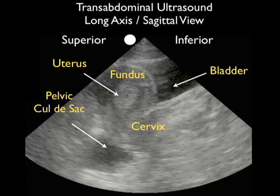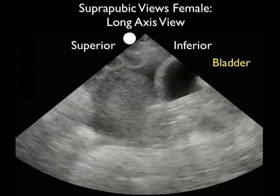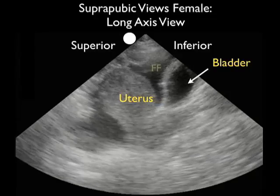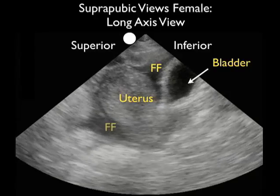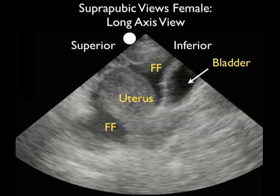Let's contrast this clip, in which we see a small amount of free fluid within the pelvic cul-de-sac, with this one, in which we have a female trauma patient with a large amount of bleeding within the pelvic cavity. Again, a long axis scan superior to the left and inferior to the right — the bladder is the dark structure inferiorly and the uterus is superior to the bladder. Notice the free fluid posterior to the uterus within the cul-de-sac, but note that the amount of fluid also comes anterior to the uterus, as seen between the uterus and the bladder. This denotes a large amount of blood within the pelvic cavity.